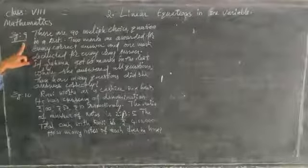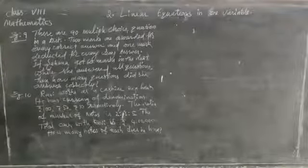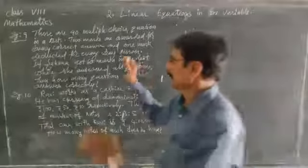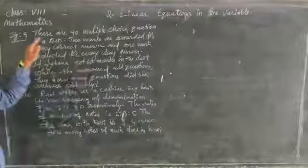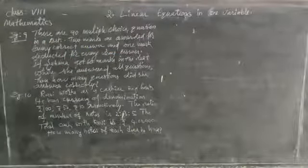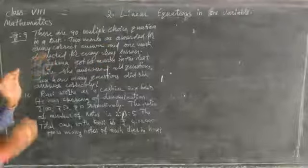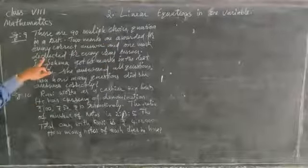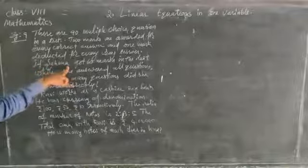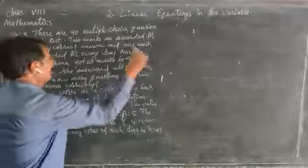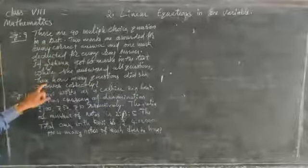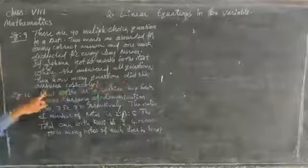Next example — it is the 9th example; we completed 8 examples. Now: there are 90 multiple choice questions in a test. 2 marks are awarded for every correct answer and 1 mark is deducted for every wrong answer. If Sahana got 60 marks in the test and she answered all questions, how many questions did she answer correctly?